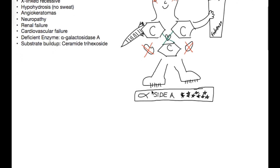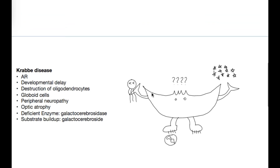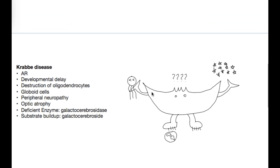Next on the list is Krabbe's disease. Since Fabry's disease is the only one that's X-linked recessive, Krabbe's disease is autosomal recessive. 'Crabby' is actually a Pokémon character that's a crab, and crab sounds like Krabbe, so I drew a crab. For developmental delay, I drew question marks on top of the crab's head. For destruction of oligodendrocytes — which have really long dendrites and a broad reach — I drew a little squid, and the crab is killing it.